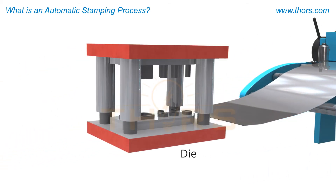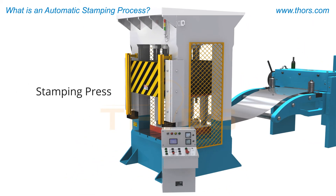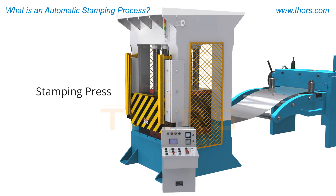A die is a one-of-a-kind tool that is designed and constructed for one specific part. Every different part requires its own die. The die performs the actual cutting, bending, or forming processes to create the finished part. The die is contained in a stamping press, which under power moves the die to a closed position, causing the die to perform the processes for which it was designed.